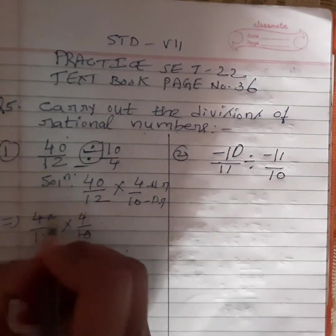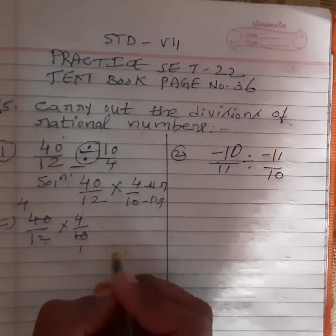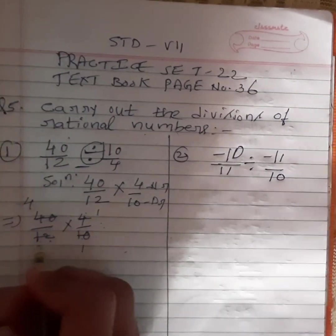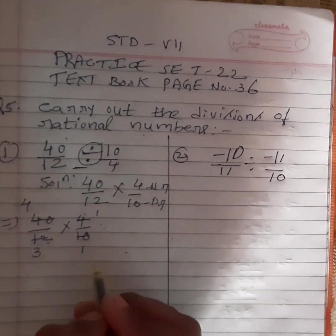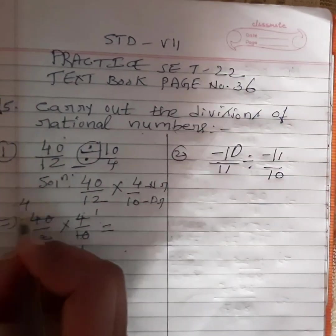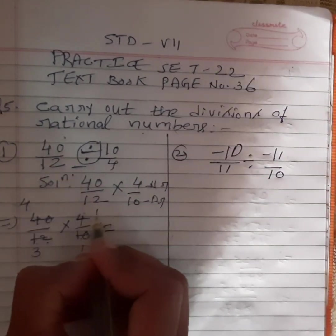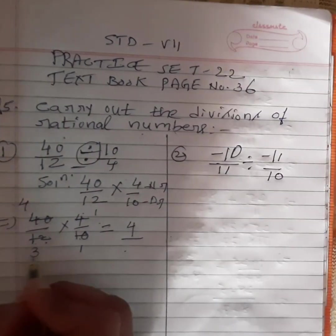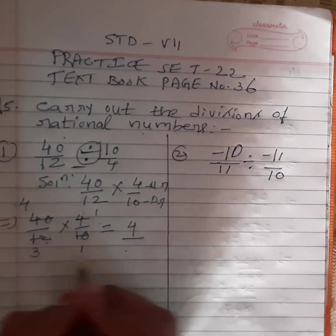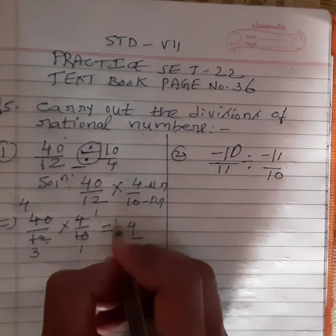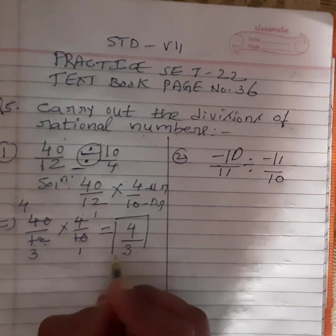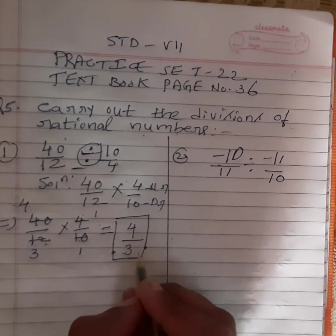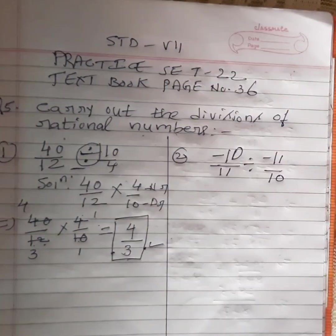10 ones are 10, 4s are 40. Next, 4 ones are 4, 3s are 12. Here we got 4 and 1. So we will multiply: 4 ones are 4. And here we got 3 and 1. So 3 ones are 3. 4 by 3 is not going in one particular table, so 4 by 3 is our final answer.